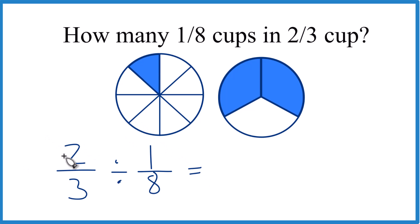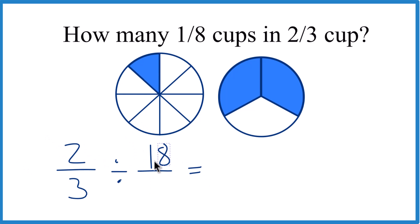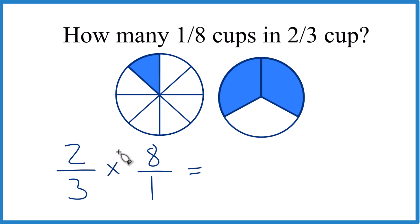And we can do this if we take that reciprocal. We take the reciprocal of one-eighth. The reciprocal of one-eighth is eight over one. Now instead of division we can just do multiplication and that's a lot easier.